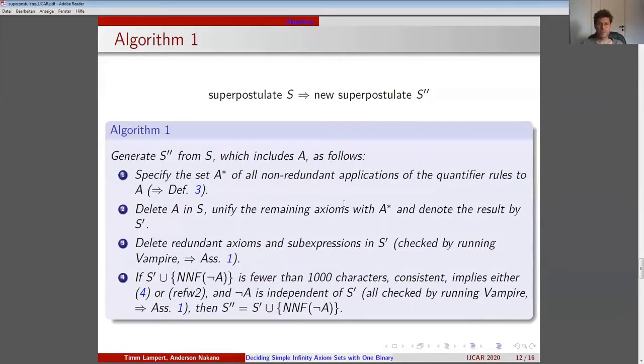Based on the presumptions of L-completeness and non-redundant applications of our quantifier rules, we can now specify the rule to generate a new superpostulate S' from a superpostulate S. Generate S' from S which includes A as follows. Specify the set A' of all non-redundant applications of the quantifier rules to A. Second, delete A in S, unify the remaining axioms with A*, and denote the result by S'. Third, delete redundant axioms and subexpressions in S' checked by running Vampire.